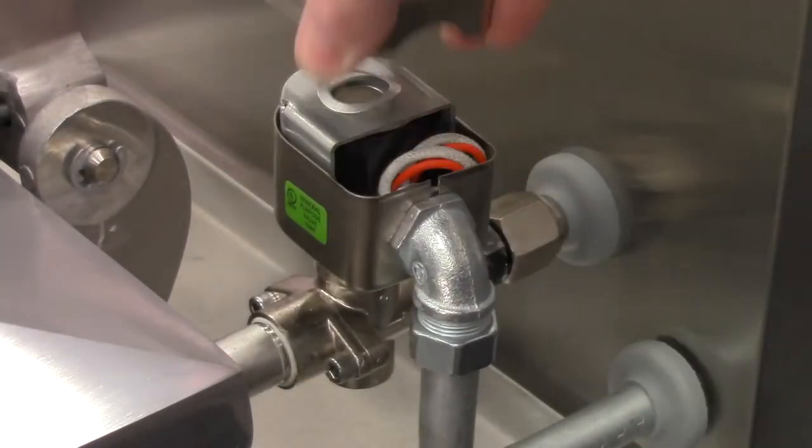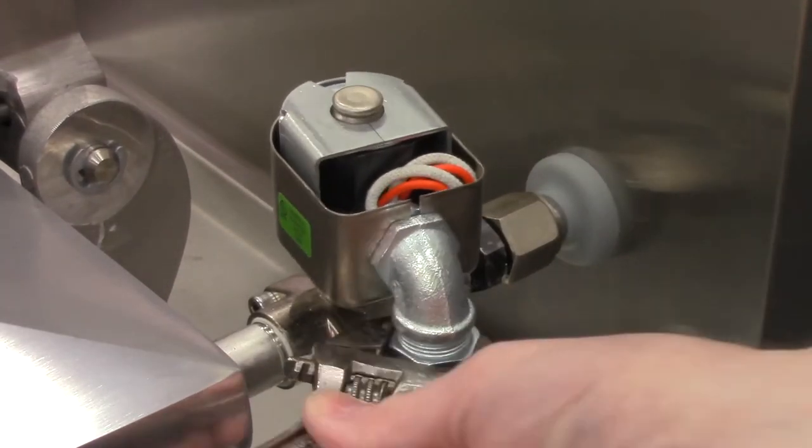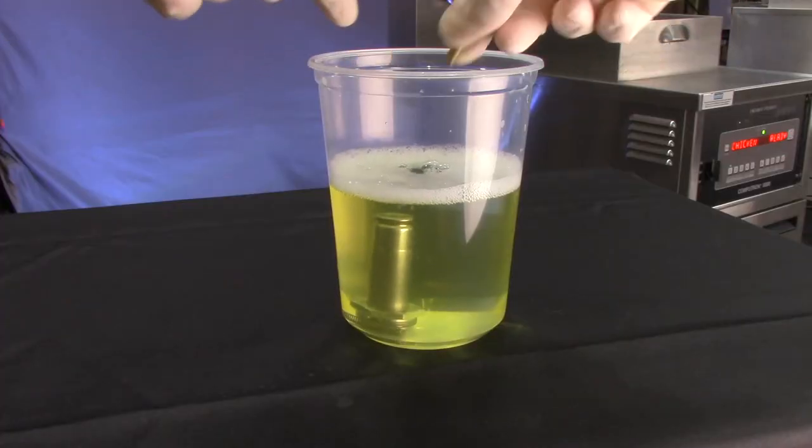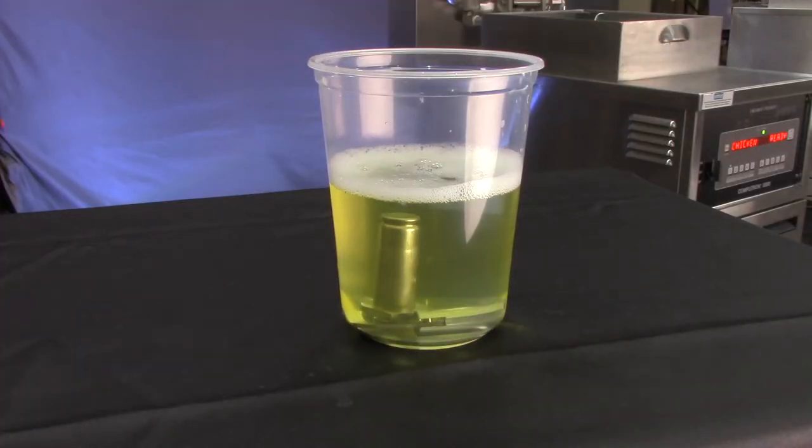Start with a cool fryer. Start by disassembling the solenoid valve like we did in the solenoid valve video. Clean this valve and put it back together.